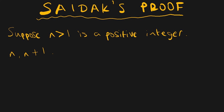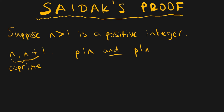So these two numbers are co-prime, which means their highest common factor is one. Why is that? Well, let's suppose we have a number p which divides n, and also suppose that p divides n plus one.